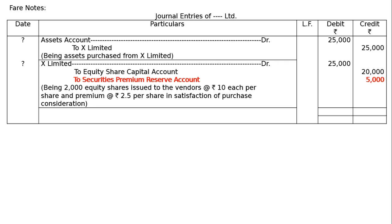Next entry: X Limited debited rupees 25,000 — to Equity Share Capital Account rupees 20,000 (2000 shares at rupees 10 each), and to Securities Premium Reserve Account rupees 5,000 (2000 shares into rupees 2.50). Being 2000 equity shares issued to the vendors at rupees 10 per share with a premium of rupees 2.50 per share in satisfaction of the purchase consideration. Total rupees 25,000. This is the final answer.